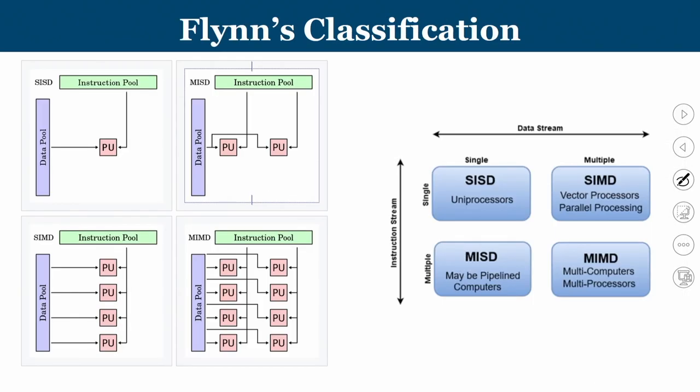Let us now talk about an important background required to appreciate GPU operation — Flynn's classification. Depending upon what programs are going to run and what the underlying hardware is, with respect to instructions and data, we have four different classifications of parallel computers. The main focus is: you have an instruction that is going to operate on data. Sometimes one instruction operates on multiple data; sometimes you have one instruction and one data; sometimes multiple different instructions operate on a wide range of data.